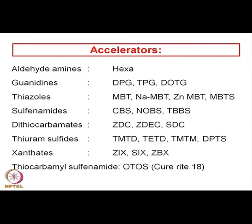In the previous lecture on rubber products, I was discussing the different types of accelerators used for vulcanization or cross-linking of different rubbers — natural rubber or synthetic rubbers. There are a large number of accelerators available for vulcanization of rubbers. Accelerators are used for accelerating the reaction between sulfur and rubber. These are basically amine derivatives and there are different classes of accelerators.